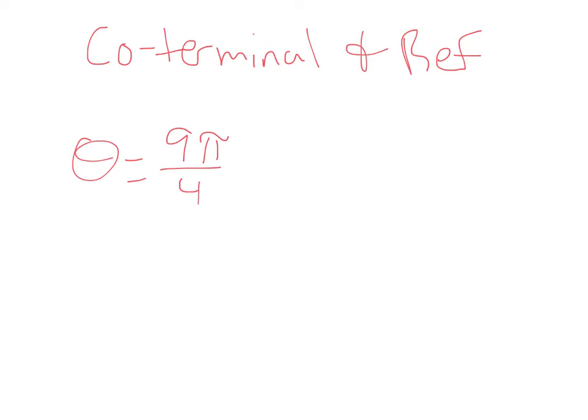So just like with degrees, we're going to talk about coterminal and reference angles. Sound good? So let's say theta is 9 pi over 4. Well, on my graph here, it's going to come all the way around. Now remember, 2 pi is 360. So that's 2 pi right there. 8 pi over 4 would be 2 pi, so I've got to go pi over 4 more. There's my angle. So that means my reference angle is pi over 4. Because I went pi over 4 past my x-axis. Remember, it's always drawn to the x-axis.